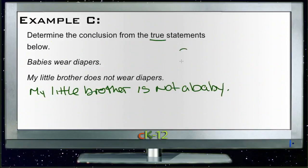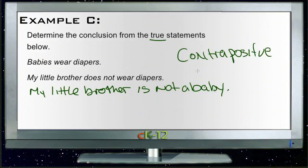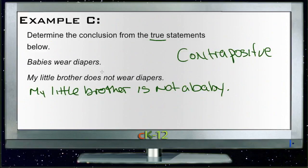Based on our contrapositive rule, we can verify that this is true. If babies wear diapers is true, then if the B part of it is not true, then the not A part of it is true. So if babies wear diapers and his little brother does not wear diapers, then he's not a baby.